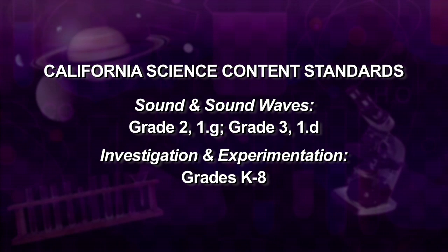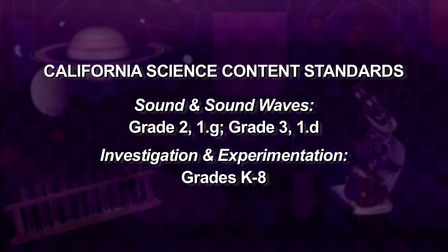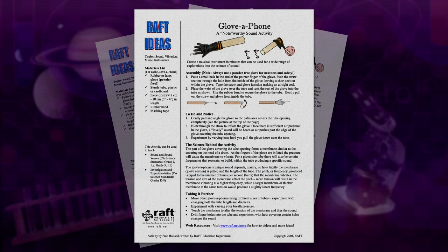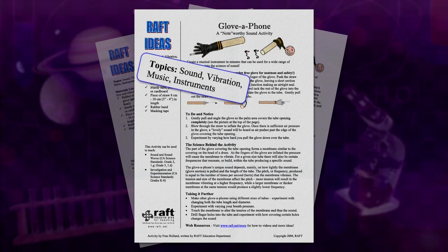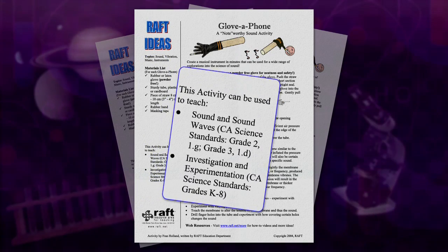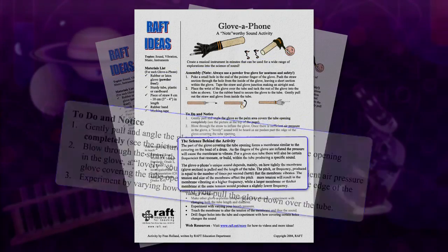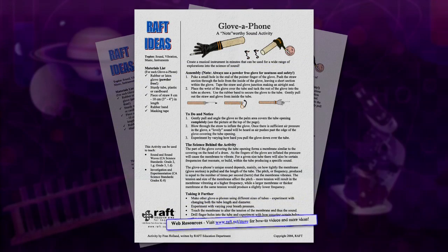Standards in your state may vary, but RAFT lessons are easily adaptable and often applicable to additional subject areas and grade levels. If you've downloaded the RAFT idea sheet online, you'll find your sheet includes the following sections to guide you through the activity: topics, materials list, this activity can be used to teach, assembly, to do and notice, the science behind the activity, taking it further, and web resources.